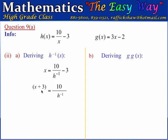We add 3 to both sides, giving us x plus 3 equals 10 divided by h to the minus 1. x plus 3 is the same as x plus 3 divided by 1. We then multiply across to make h to the minus 1 the subject.